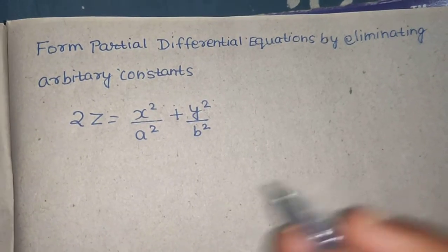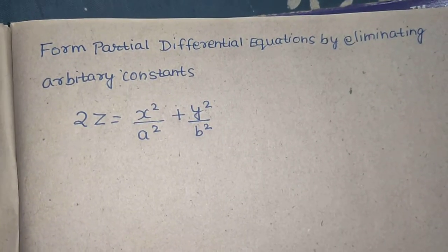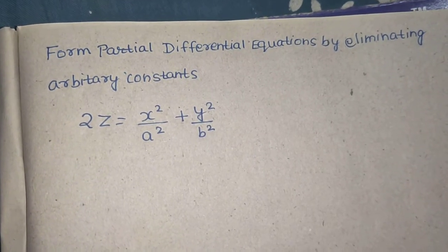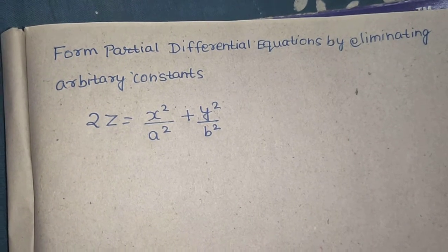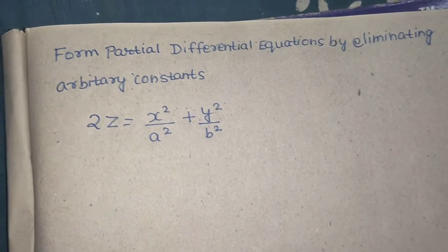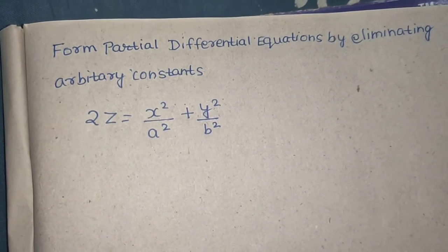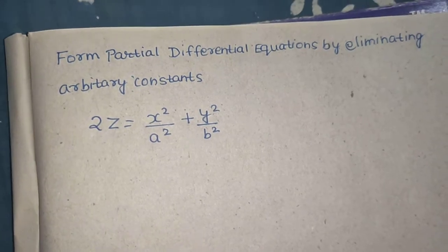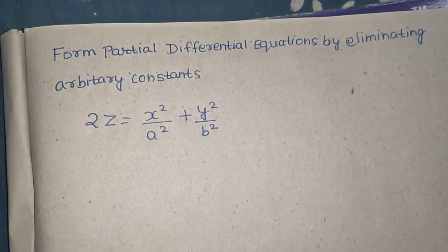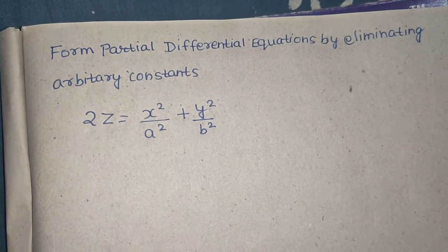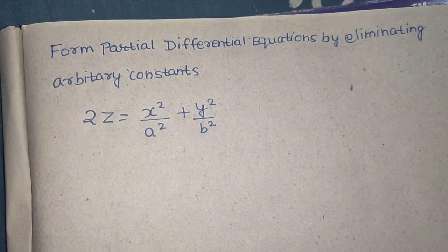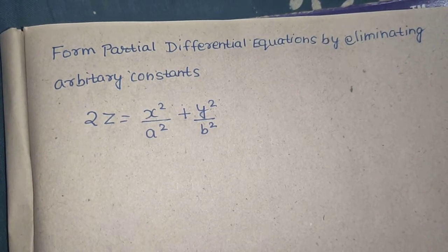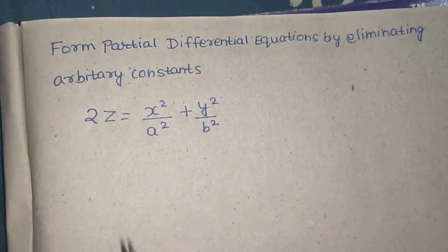There are basically three steps. In the first step, differentiate partially with respect to x. In the second step, differentiate partially with respect to y. In the third step, we will eliminate the arbitrary constants.